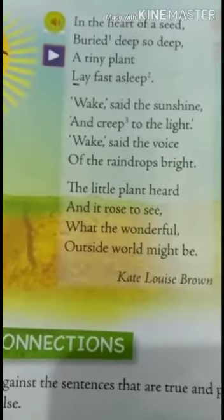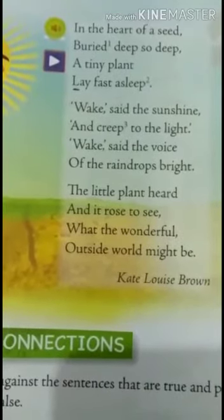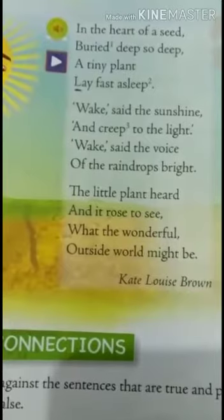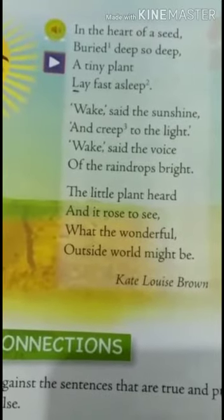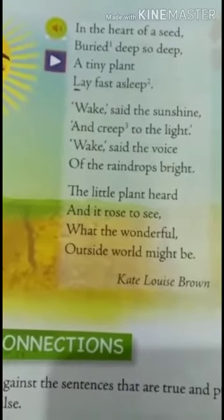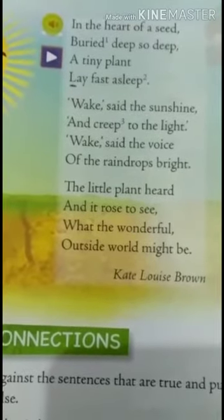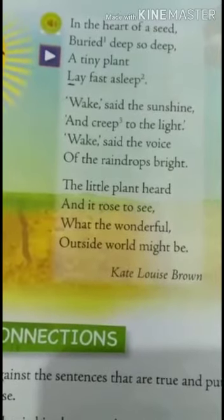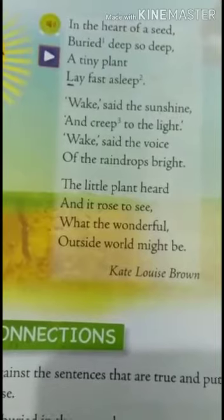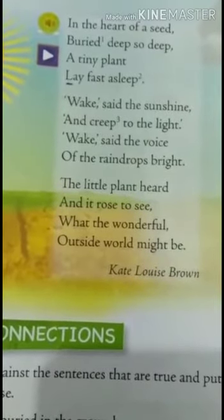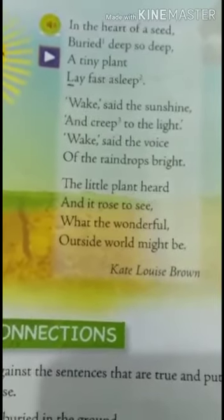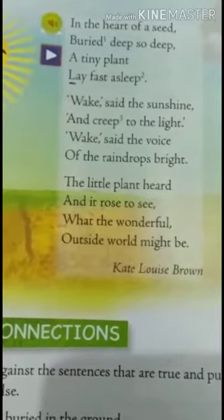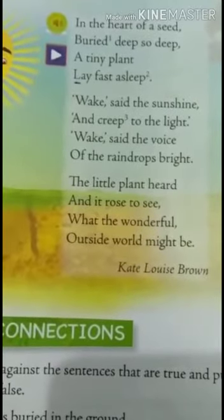Second stanza: Wake, said the sunshine, and creep to the light. Wake, said the voice of the raindrops bright. Here the poet says what things the seed needs in order to grow and become a plant. Light is needed and water is needed so that the seed will become a plant. The sunshine asks the tiny plant to wake up and creep to the light. Creep means come out slowly through the soil.